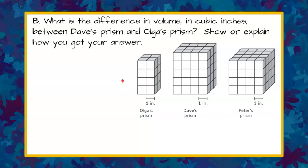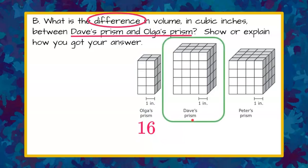Welcome back. We are being asked to find the difference. Difference means subtract. We're using volume again, and now we're comparing Dave's prism and Olga's prism. We know that Olga's prism is 16 cubic inches from part A. So to compare and find the difference, we need to find the volume of Dave's prism.